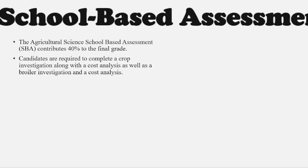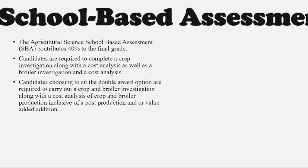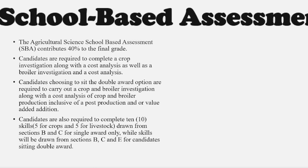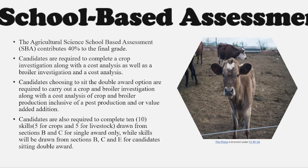For students doing the double award option, they are required to do a crop and a broiler investigation along with the cost analysis for both. In addition, they have to do a post-production and/or value-added component. Students are required to complete 10 practical skills — five for crops and five for livestock. For a single award, these are drawn from sections B and C of the syllabi; for double award, from sections B, C, and E.